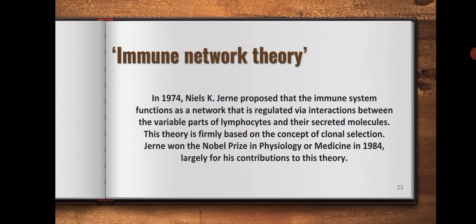In 1974, Niels K. Jerne proposed that the immune system functions as a network that is regulated via interactions between the variable parts of lymphocytes and their secreted molecules. This theory is firmly based on the concept of clonal selection. Jerne even won the Nobel Prize in Physiology and Medicine in 1984, largely for his contributions to this theory.